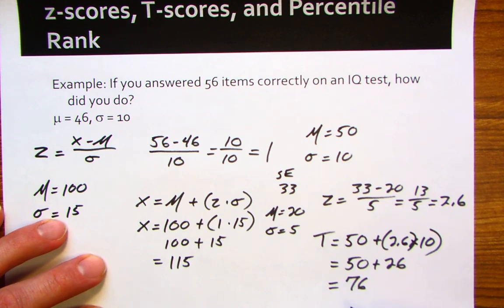Usually on these psychological inventories, any t-score that's 70 or above is considered clinically significant. That would be the case here as well for this particular example.